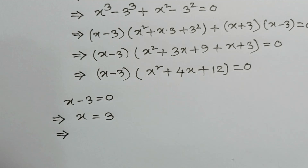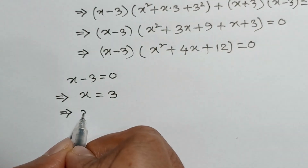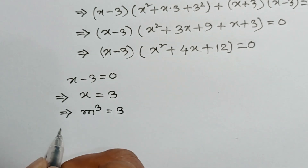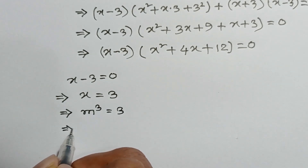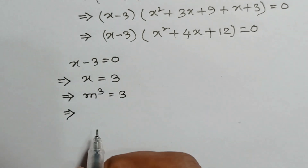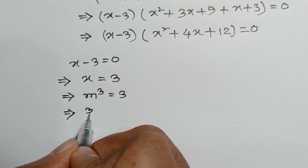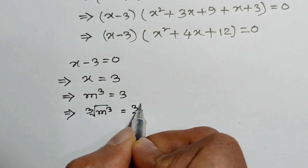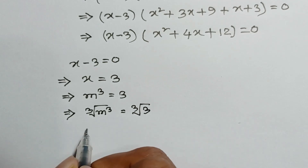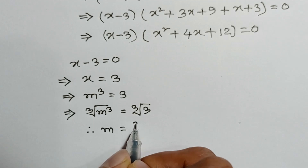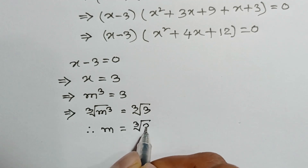Putting back the value of x, we get m cubed equals 3. Taking the cube root of both sides, we get the cube root of m cubed equals the cube root of 3, so m equals the cube root of 3.